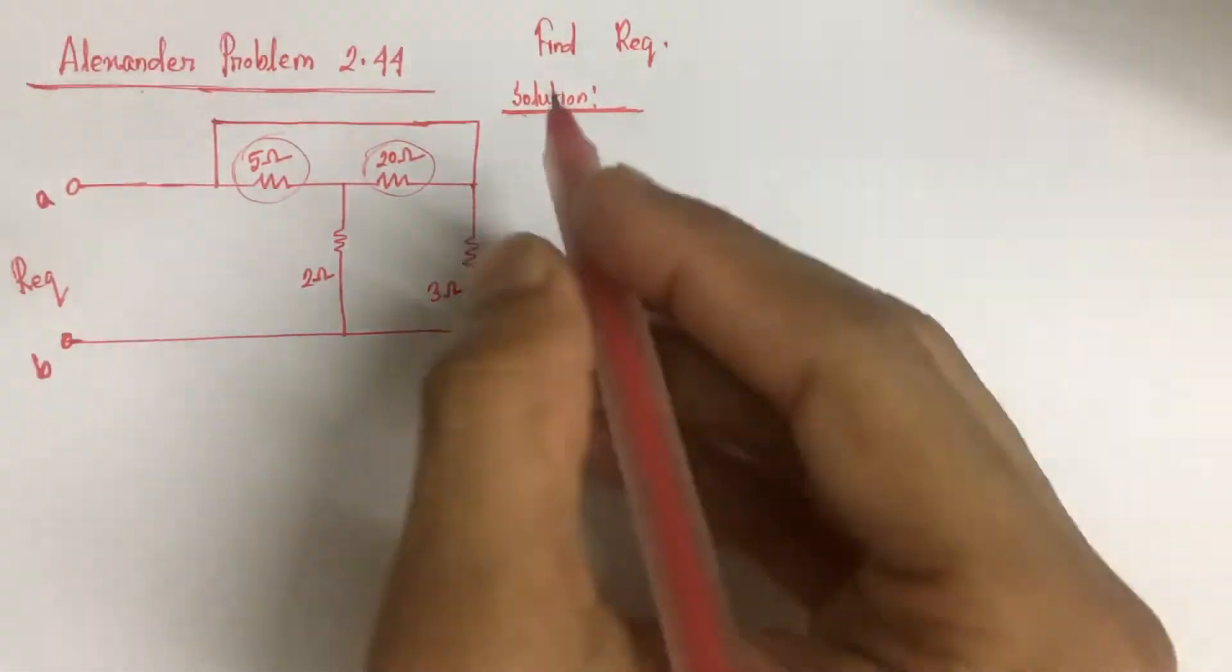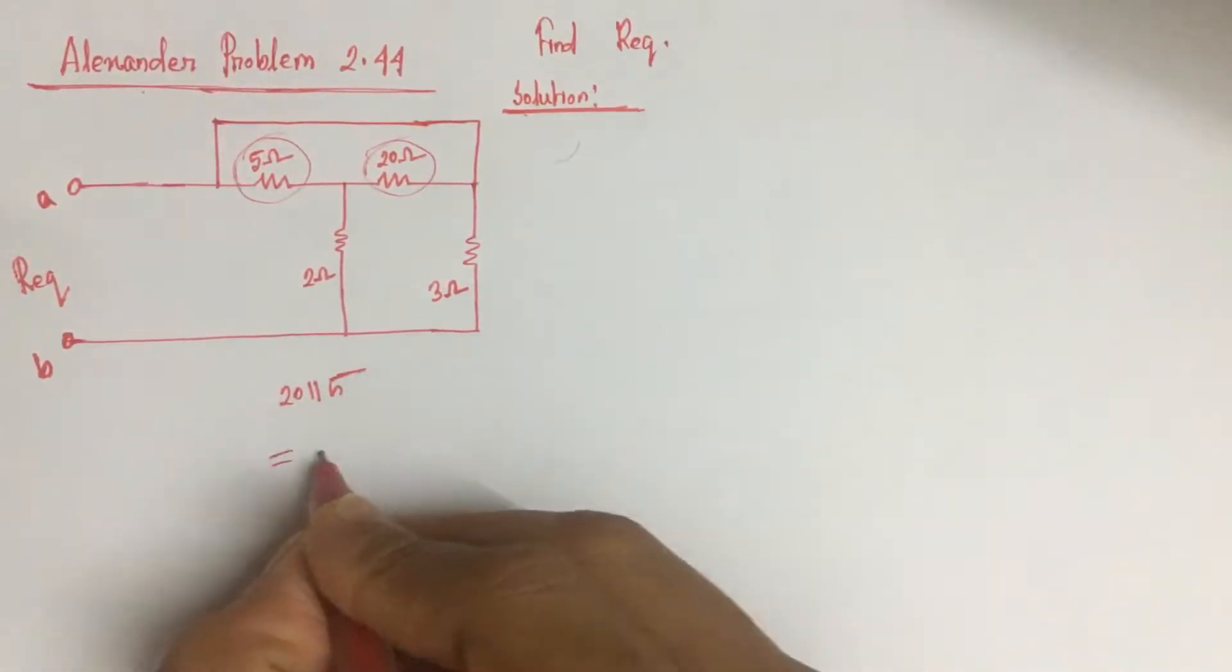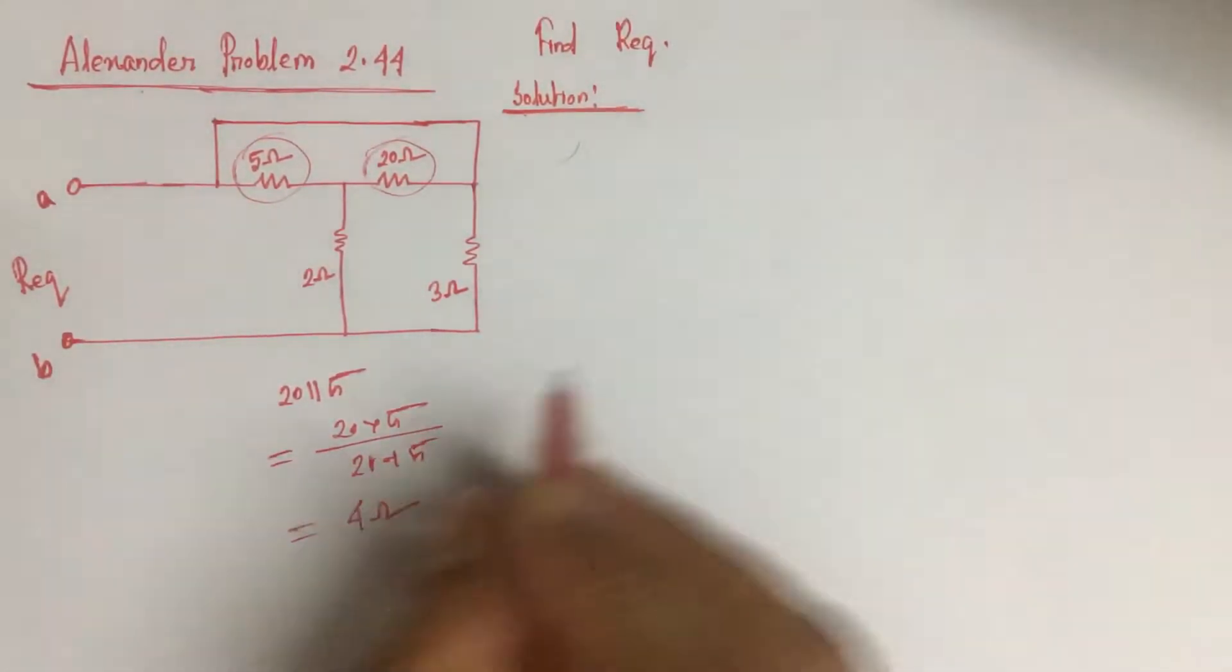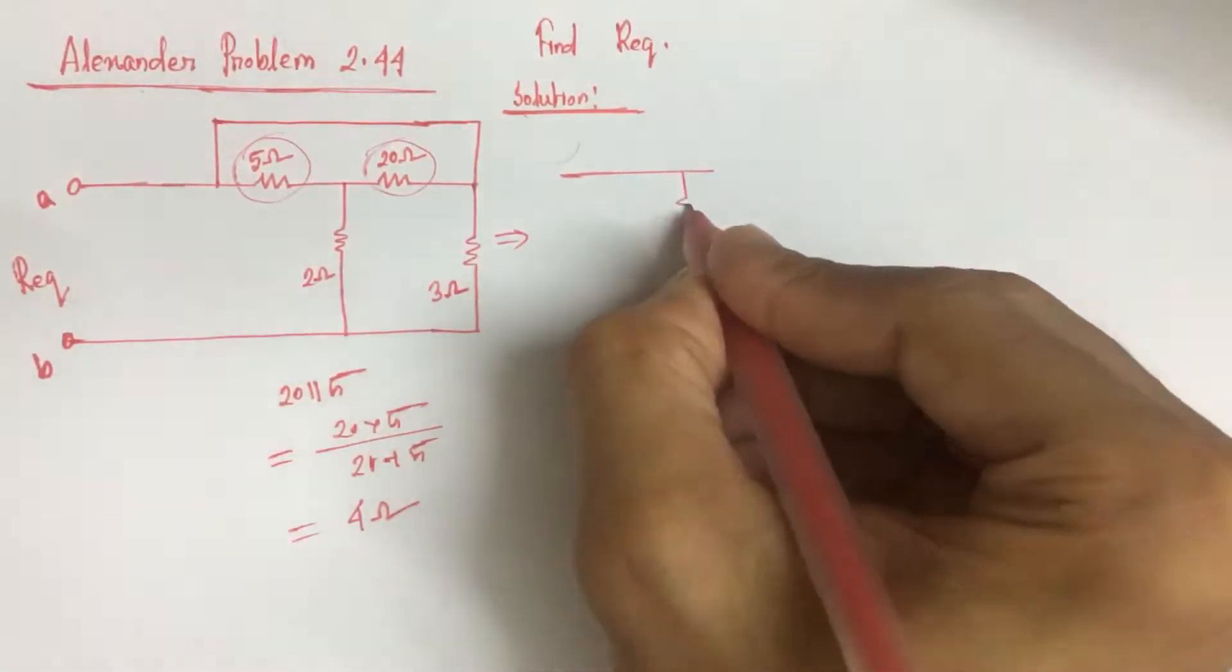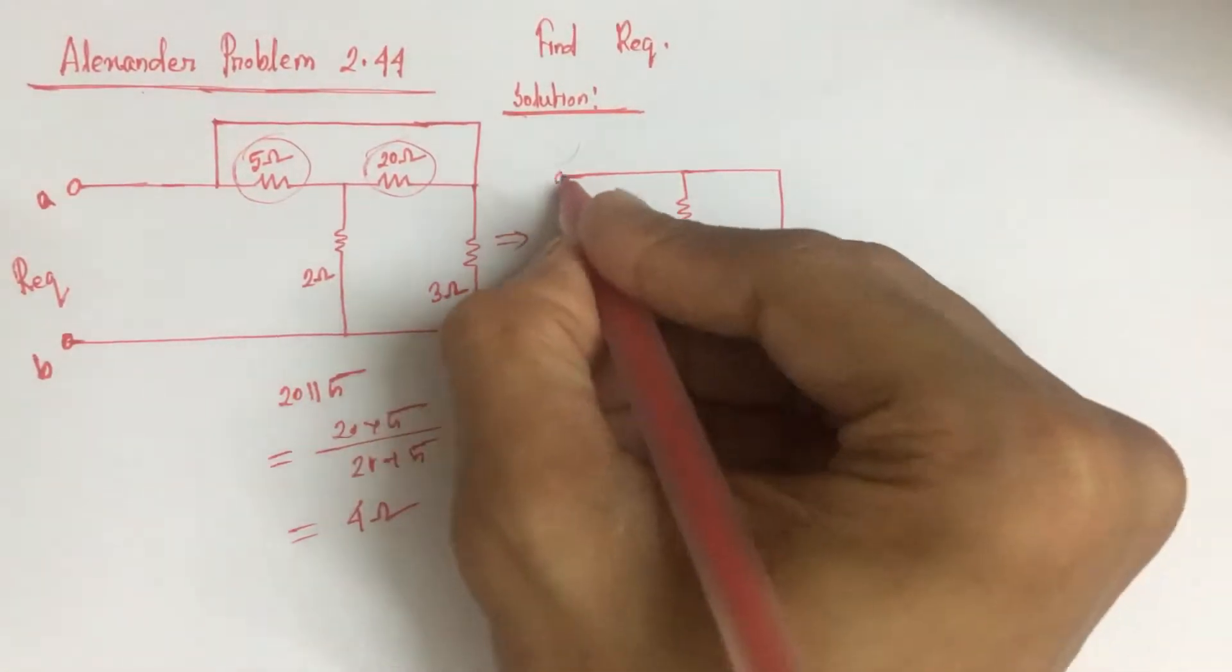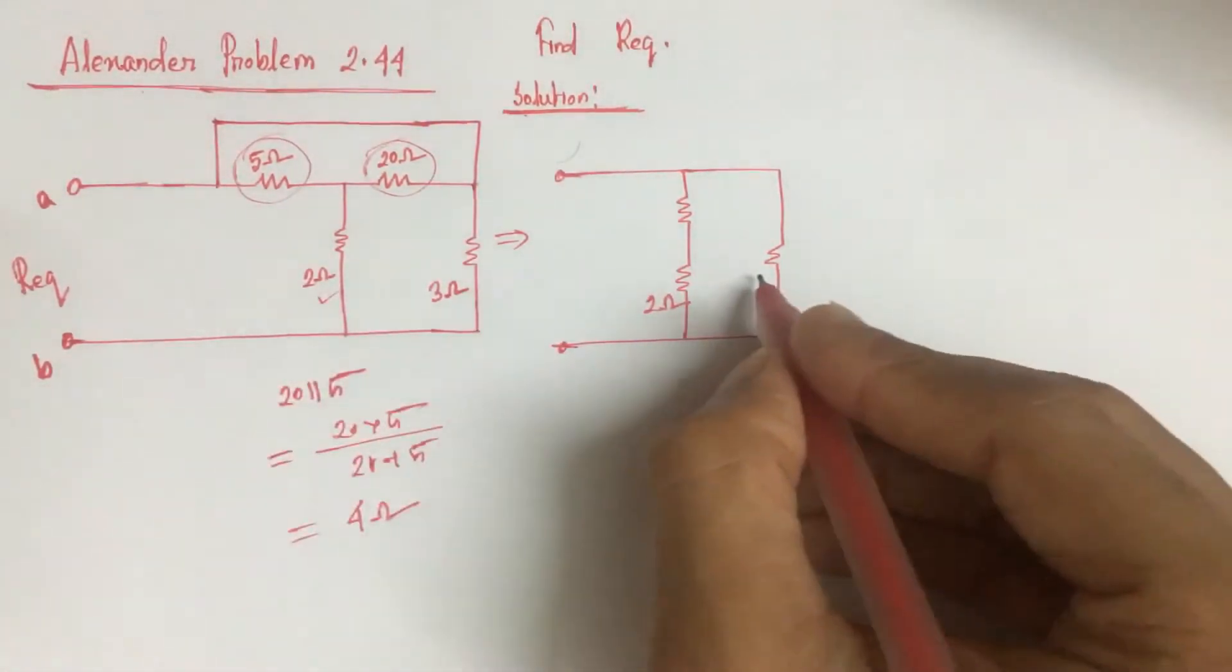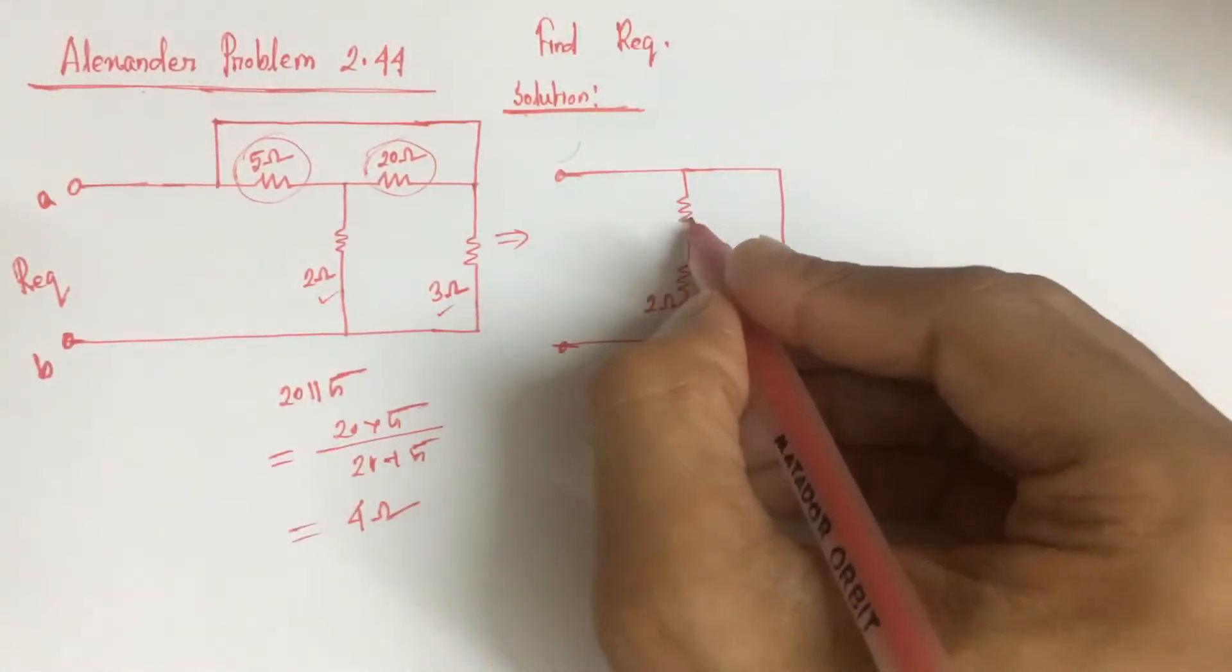So 22 ohm resistance is in parallel with 5 ohm resistance, which can be replaced by a resistance of 4 ohm. So if we redraw the equivalent circuit, it will become: this is 2 ohm from this 2 ohm, and this is 3 ohm which came from this 3 ohm.